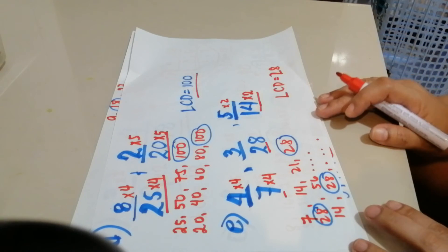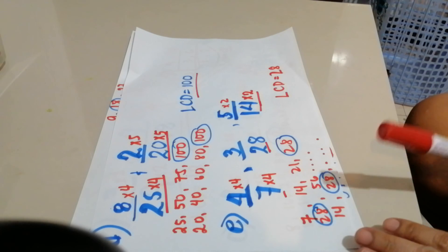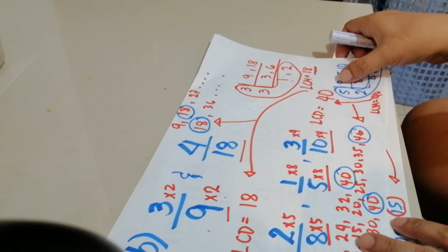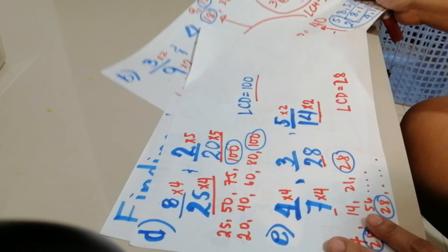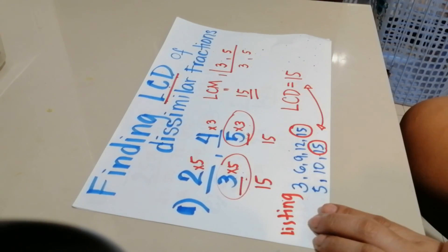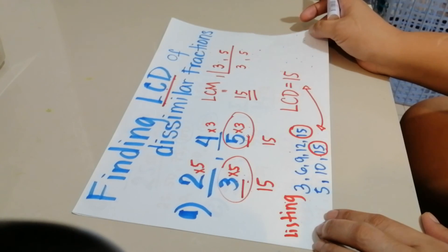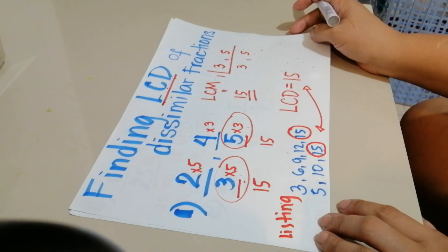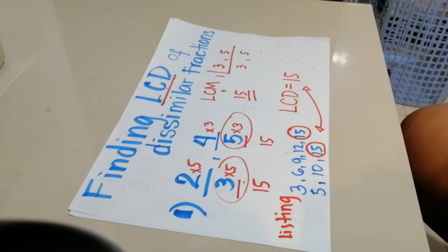So that's how we get the LCD of dissimilar fractions — you can use listing or finding the LCM. I hope you learned something today on how to get the LCD of dissimilar fractions. That's it for today. Again, this is Teacher Louise, your mommy tutor. Please like, share, and subscribe to my channel and ring the notification bell to stay updated on future videos. Feel free to message me with suggestions. Bye! Thank you!